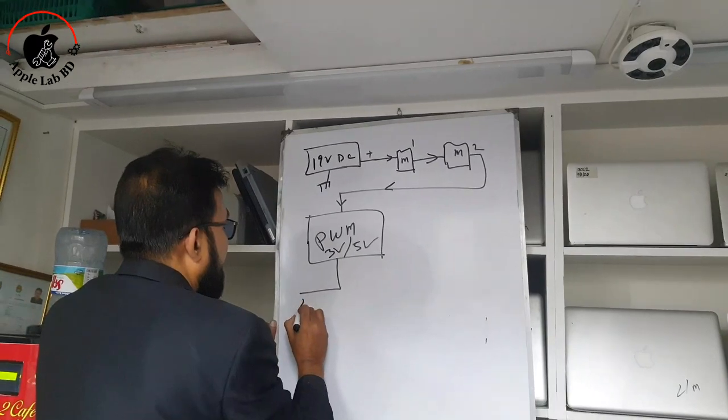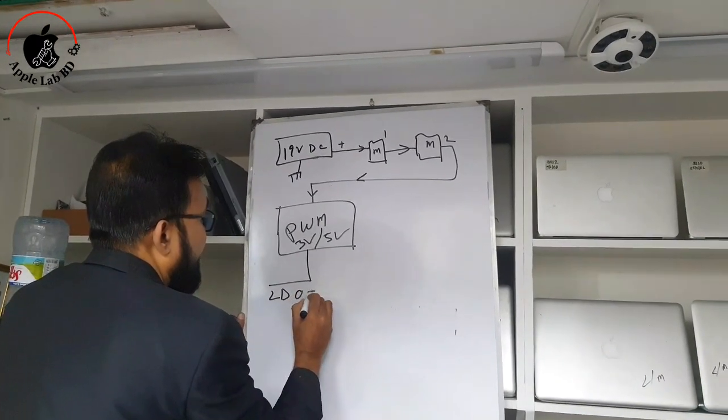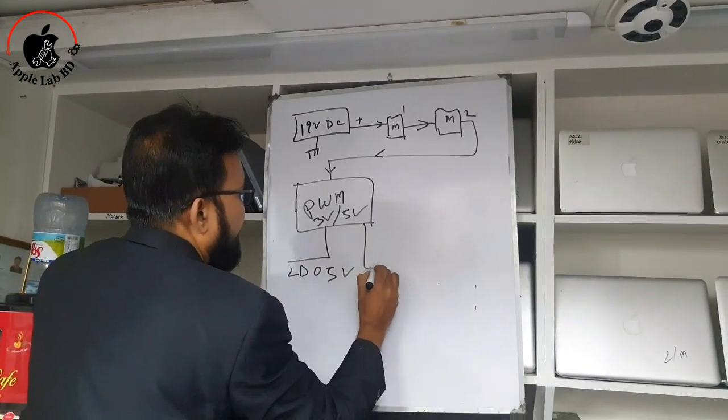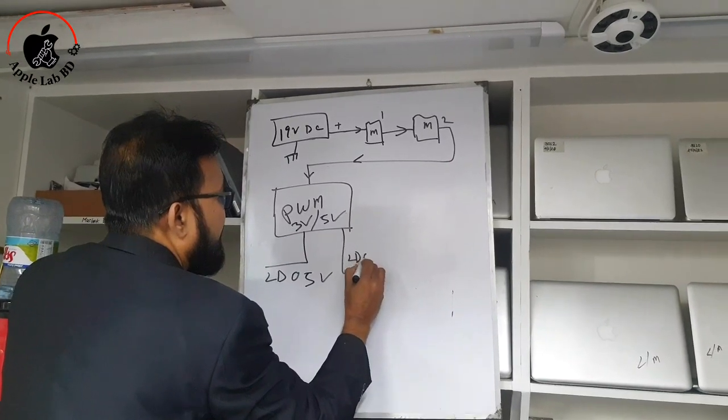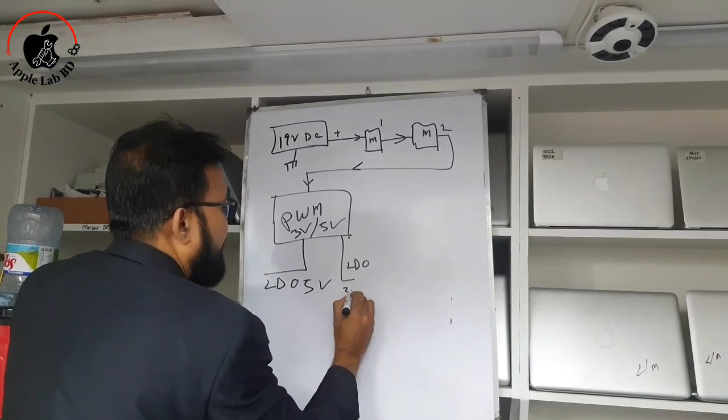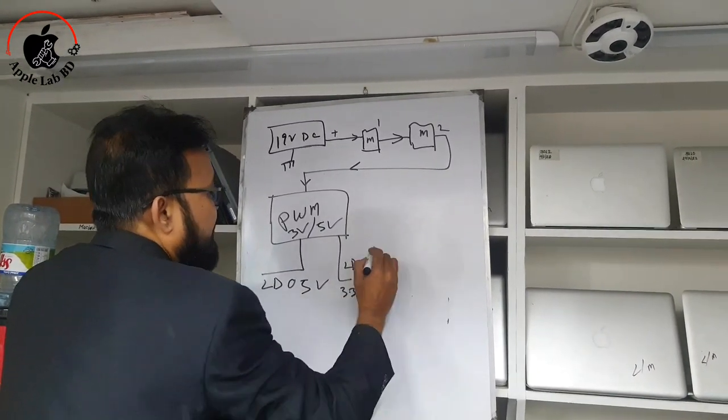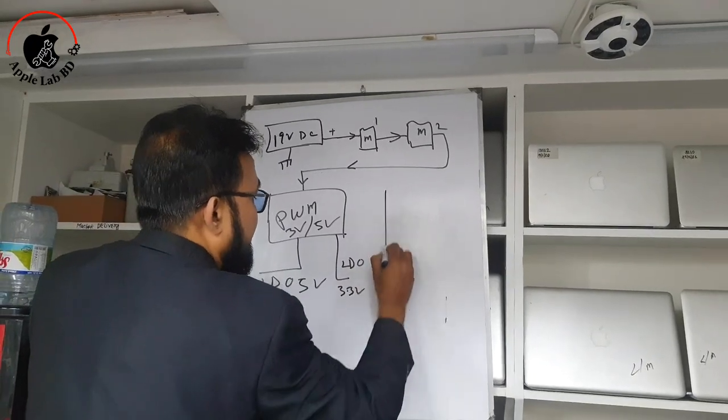This is LDO 5 volt, this is LDO3, 3 volt. So, I will give you four of them.